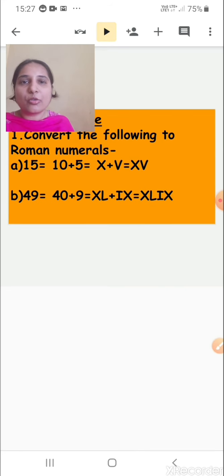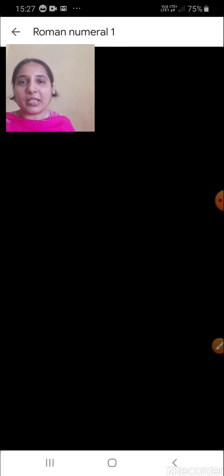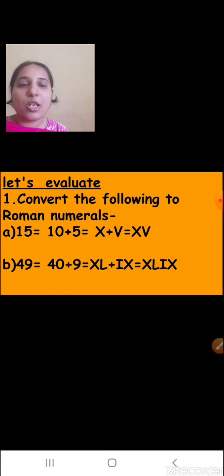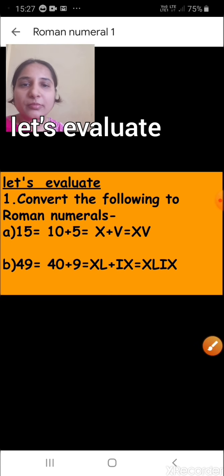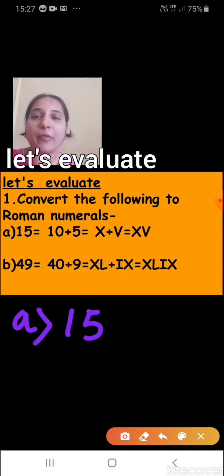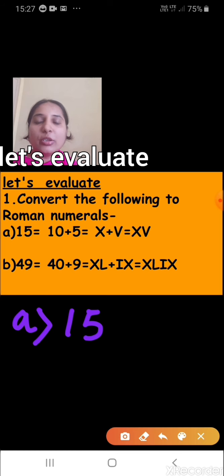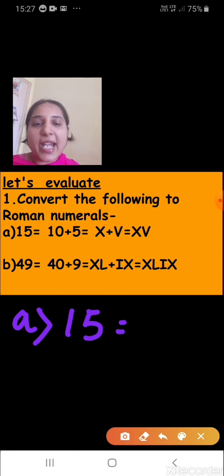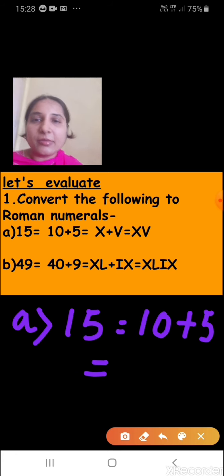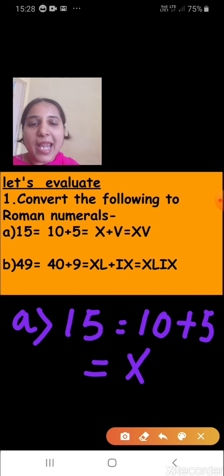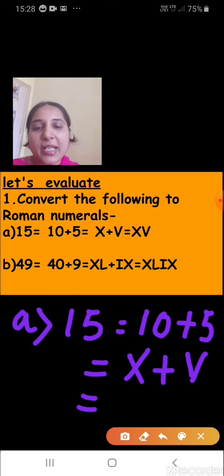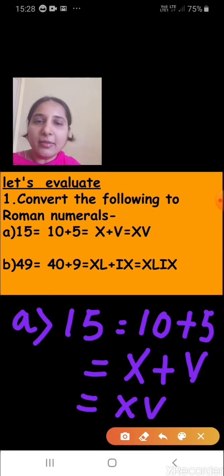Now let's see the questions from the textbook. Question 1 asks to convert the following to Roman numerals. Part A is number 15. We write it in expanded form: 10 plus 5. We represent 10 as X and 5 as V. So 15 will be represented as XV.